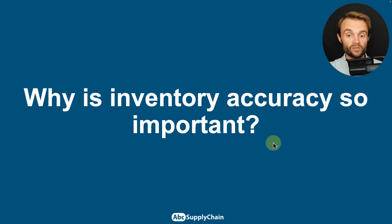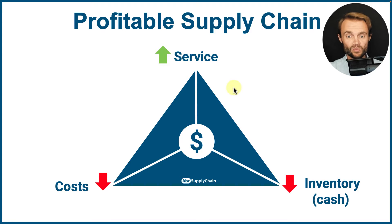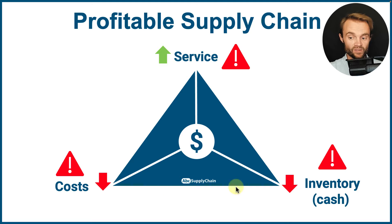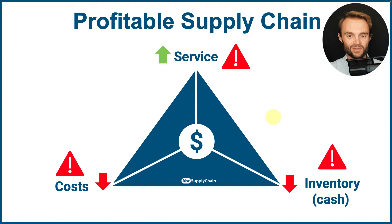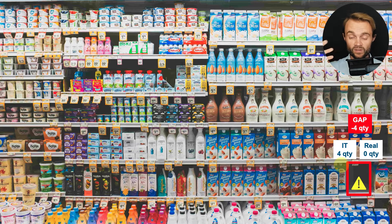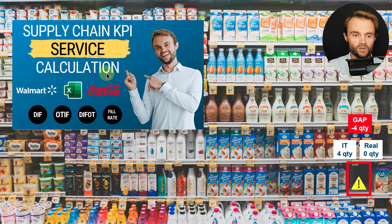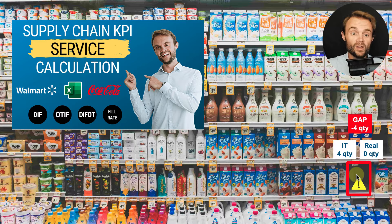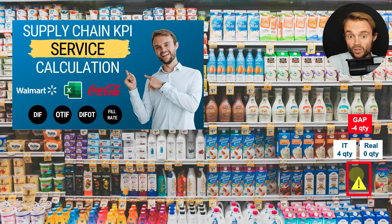Why is inventory accuracy so important? If you want to have a profitable supply chain, you need to improve customer service and reduce cost and inventory investment — especially inventory value. If you have poor inventory accuracy, you're going to hurt all three of those KPIs. For example, if you were supposed to have four units and you have zero, you won't replenish your products to the store. Your system might show 100% availability rate, but in real life you have no products and you're not replenishing — so you'll lose inventory value and a lot of sales.